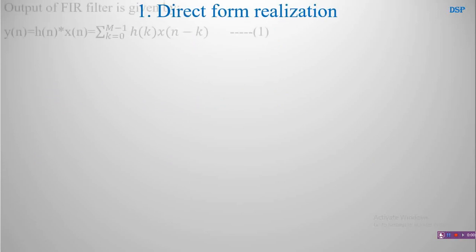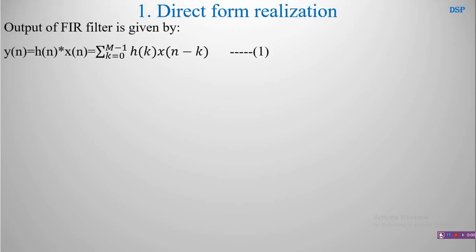Direct form realization. Let us consider the output of the FIR filter given by Y(n) = H(n) convolved with the input X(n). H(n) is the impulse response of the system and it is given by sigma k=0 to m-1 of H(k) times X(n-k), from the definition of convolution of signals.